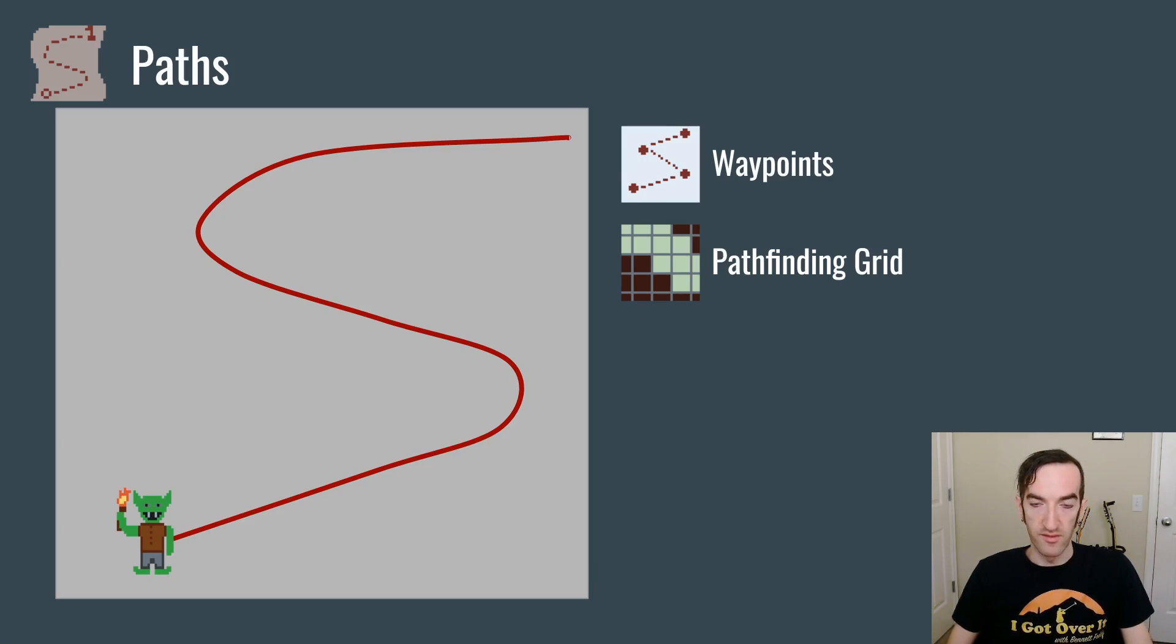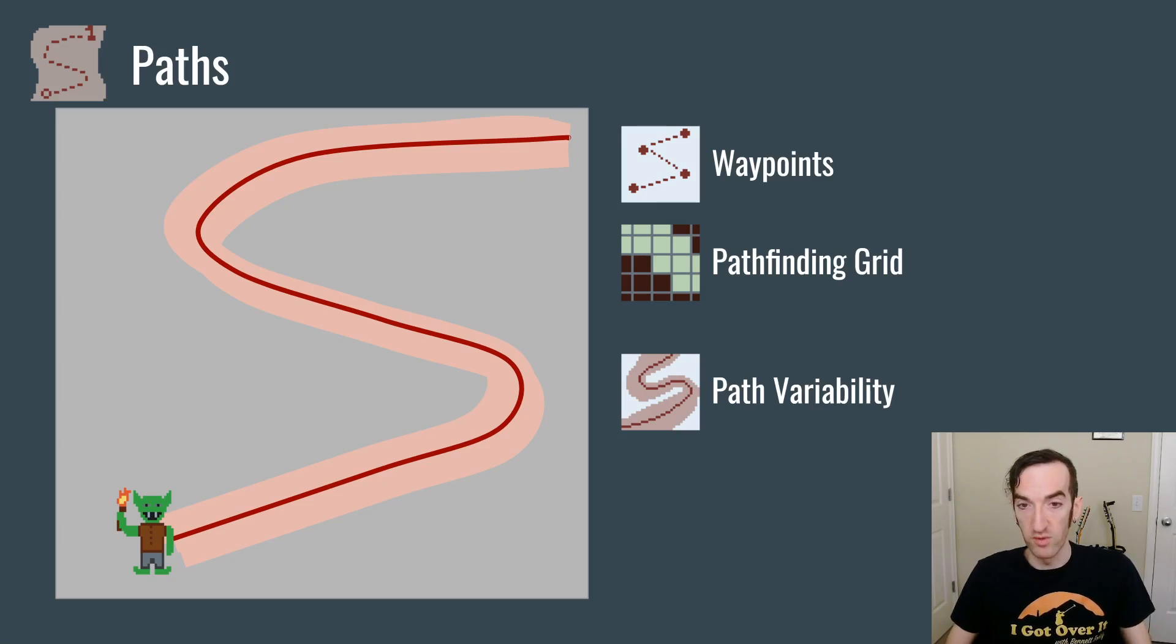Regardless of how the paths are defined, you will sometimes have some variability, where the monsters don't move directly along a defined path, but rather move along some variance, which gives them a more aesthetically pleasing perspective, in particular as they are moving in large groups.